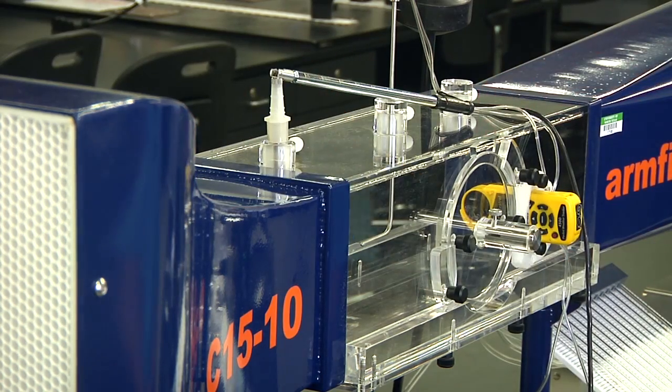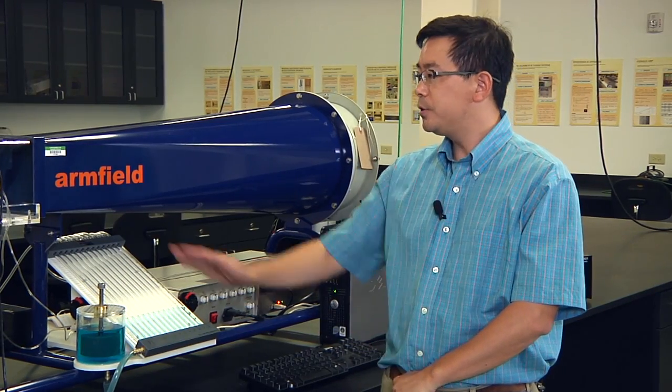Now, all three devices - hardware anemometer, pitot static tube with water manometer, and turbine anemometer - all have been installed in the working area of the wind tunnel. Next, we're going to power on the wind tunnel.